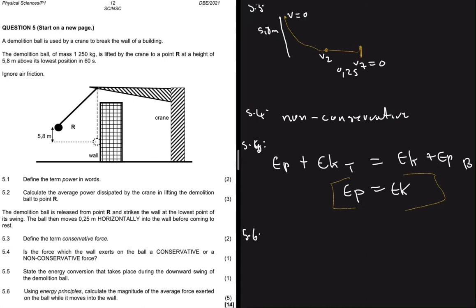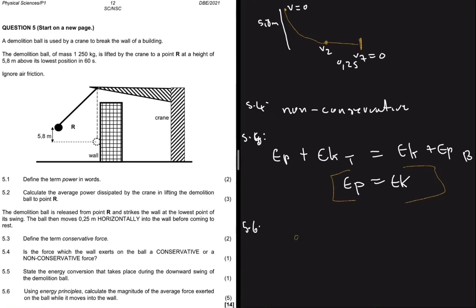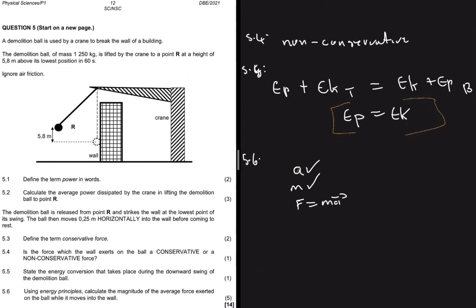But then if you pay close attention, we have v_f, we have this v_2 here, and then we have the distance covered. So with that we can calculate the acceleration of that motion. We will have the acceleration, we have the mass of the object, and then we can just use F equals ma to determine the force exerted.